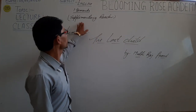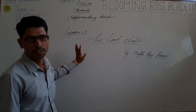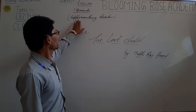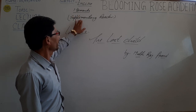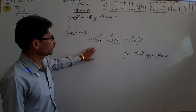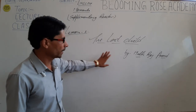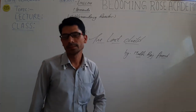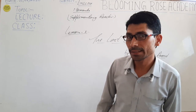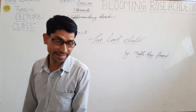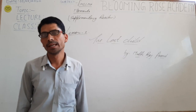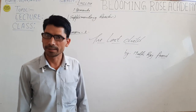Welcome back to Blooming Road English class. Today we will read our lesson from the supplementary reader, Lesson First: The Lost Child, written by Mulk Raj Anand. Mulk Raj Anand was a very great writer. He was an Indian writer and he has written many famous stories and was very famous throughout the world.